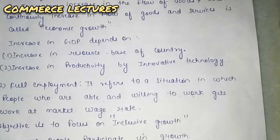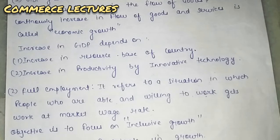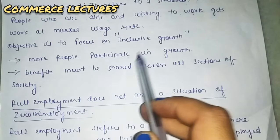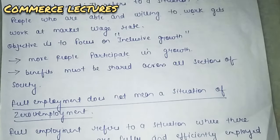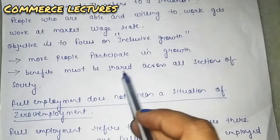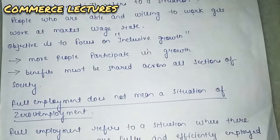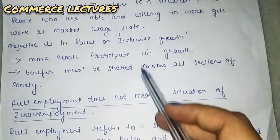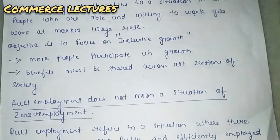The third objective is to focus on inclusive growth. Inclusive growth is where more people participate in growth and benefits are shared across all sections of society. If benefits do not reach everyone, inequality will come. So both conditions must be fulfilled for inclusive growth.